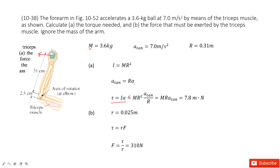Now you can input these two expressions into the torque formula. You get the final function combining them. In this function, mass is given, r is given, and the tangential acceleration is given — so very easily you get the torque.